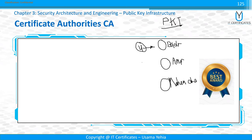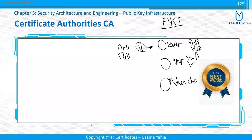You want to send encrypted data to these users. This means you must have a public key and private key for Osama, a public key and private key for Badr, the same concept with the others — public key and private key for Amr, and public key and private key for Mahendra.